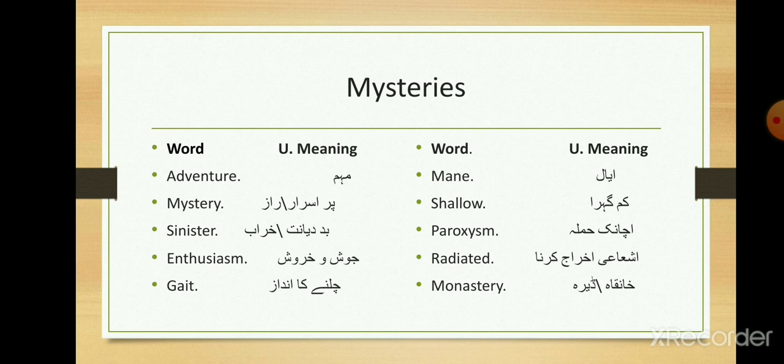First we will read the Urdu meanings. Adventure: moham. Mystery: poor israr. Sinister: kharaab. Enthusiasm: joshu khorosh. Gate: chalne ka andaaz. Mane: ayal. Shallow: kum gehera. Paroxysm: achanek hamla. Radiated: ashai khraj karna. Monastery: khan ka.